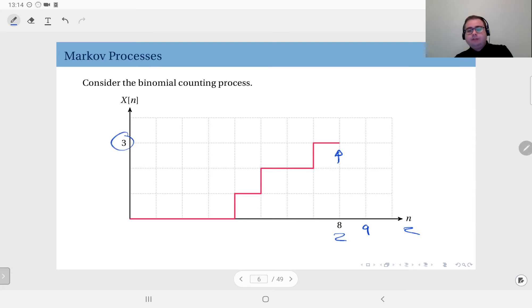Since this is going to be updated by the result of an independent Bernoulli trial, the probability that it will move to four is equal to the success probability, let's say p, and the probability that it will be constant at three is equal to the fail probability.